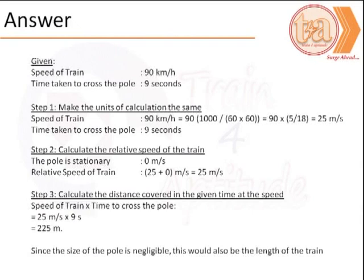The relative speed of the train is the next point that we need to take care of. The speed of the train plus the speed of the pole. The speed of the pole in this case is 0 meters per second and therefore the relative speed is 25 meters per second.